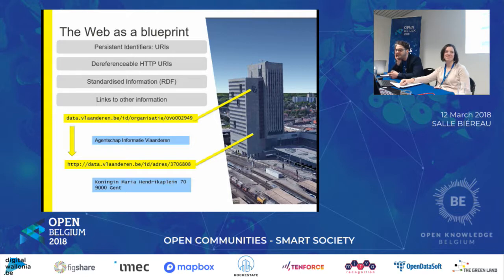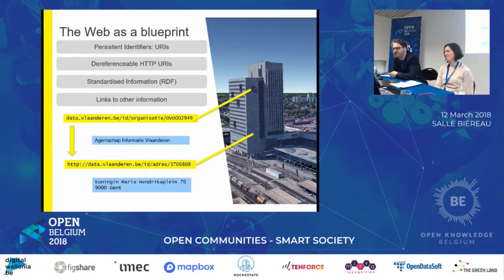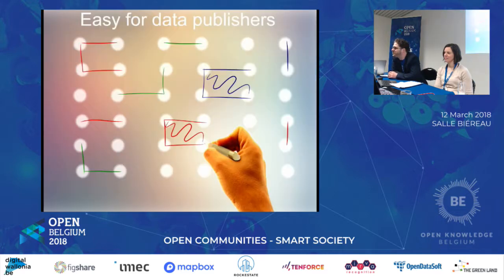The web for machines is more useful when you have links which provide information and direct to other useful information. For instance, all buildings and governmental organizations are identified by a URI, which points to an address. We're not copying the address but linking to another URI which provides other useful information.